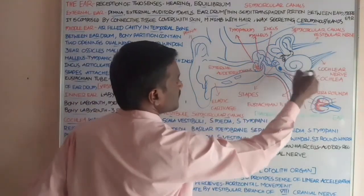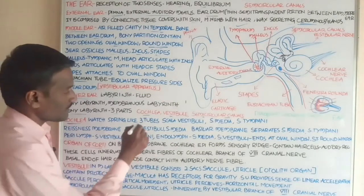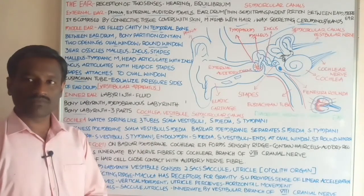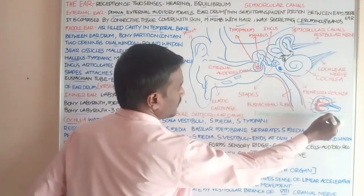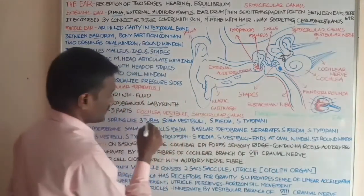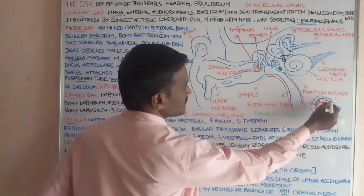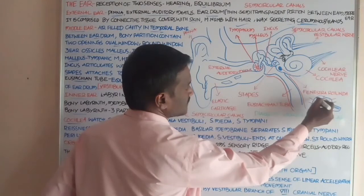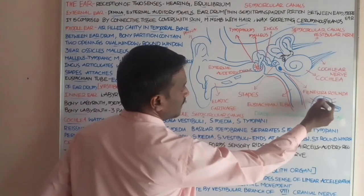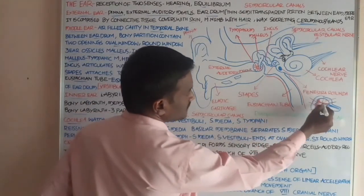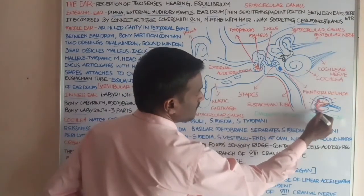The cochlea is a watch-spring-like structure. Three tubes are present in the cochlea: scala vestibuli, scala media, and scala tympani. The scala vestibuli and scala media are separated by Reissner's membrane.